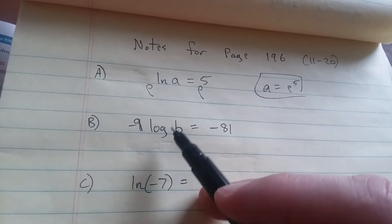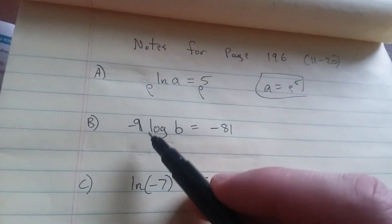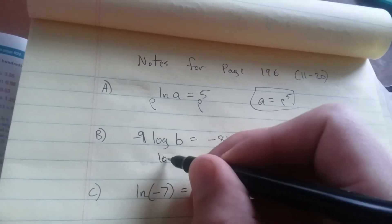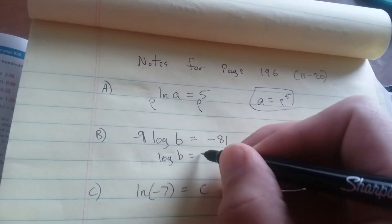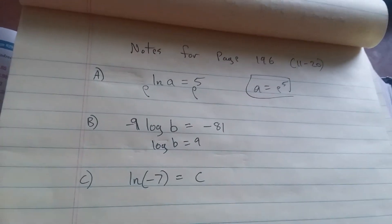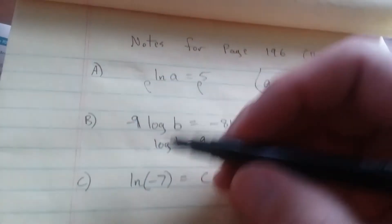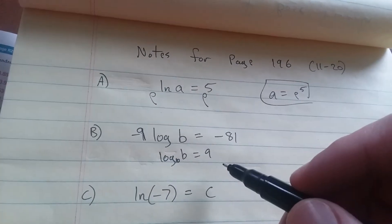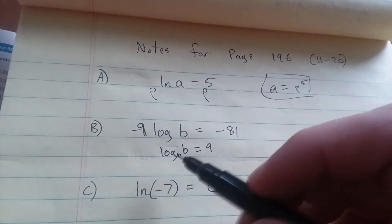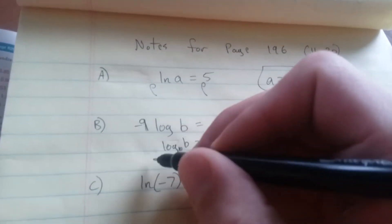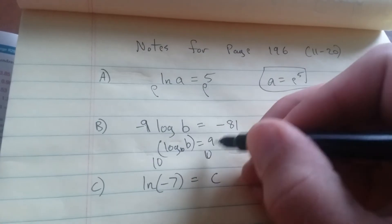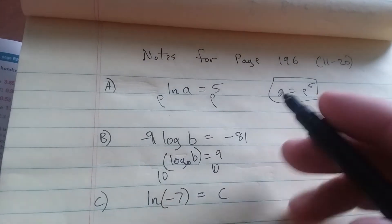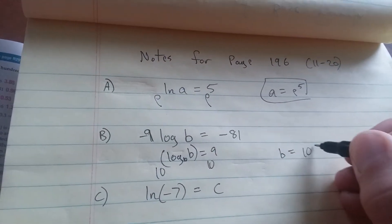Next: negative 9 times log base 10 of b equals negative 81. Start with division — divide both sides by negative 9. Log base 10 of b is equal to 9. When there's no base written, that technically means it's base 10. So we're going to make 10 the base on both sides to cancel the log base 10. So 10 to the power of this equals 10 to the power of 9. The 10 and log base 10 cancel out, so b is equal to 10 to the power of 9.